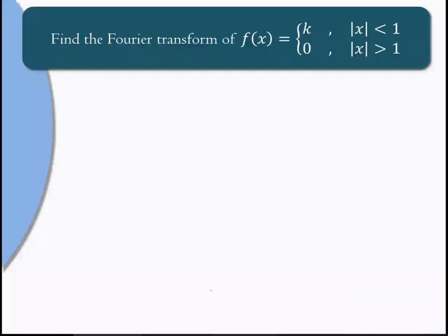Find the Fourier transform of f(x) = k for |x| < 1 and 0 for |x| > 1. Since sine or cosine is not mentioned, check whether the function is even or odd. Replace x by −x everywhere. If you get the original function, it is even; if you get minus of the original, it is odd.